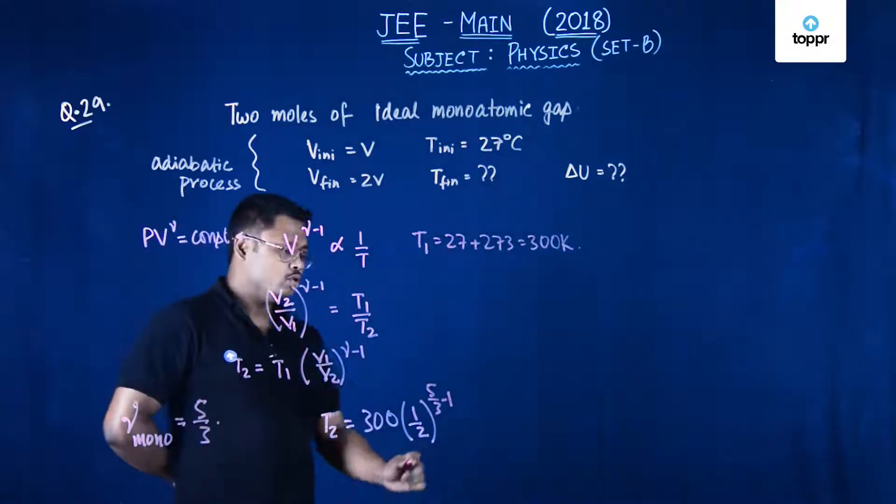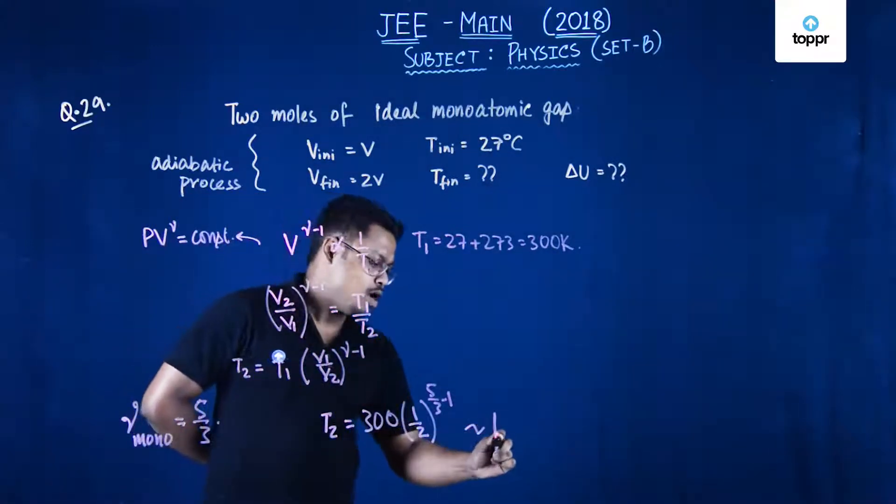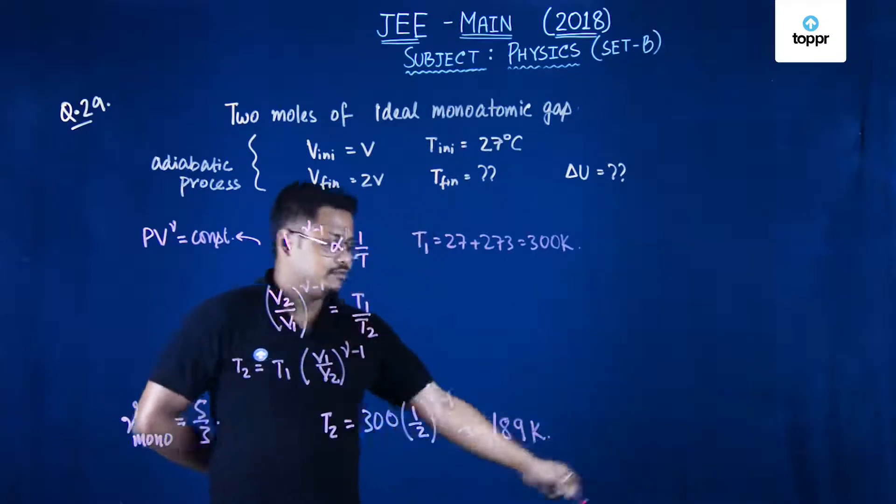So the value of T2 will come to be 189 Kelvin.